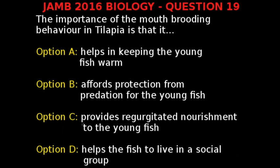Option C, provides regurgitated nourishment to the young fish. Option D, helps the fish to live in a social group. The correct answer is option B — it affords protection from predation for the young fish.